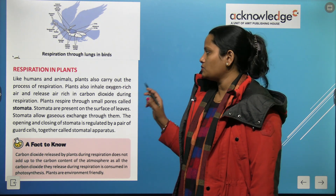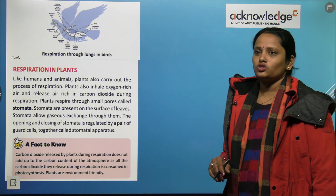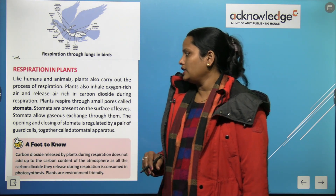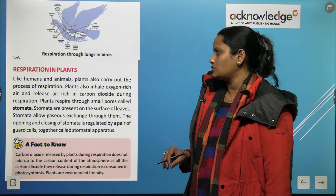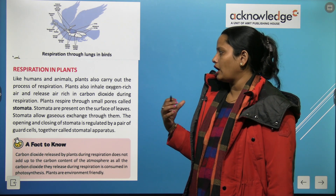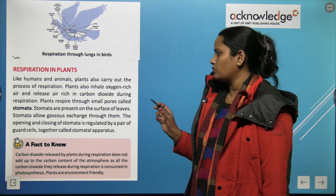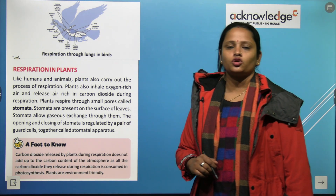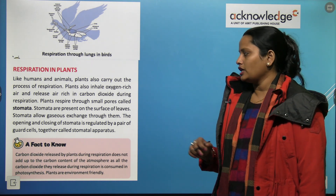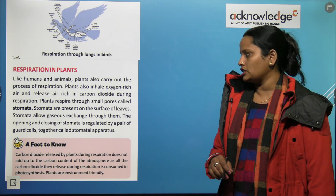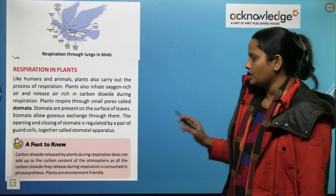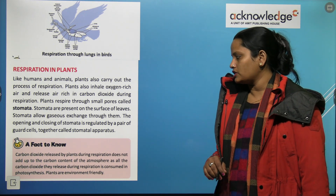Respiration in plants: like humans and animals, plants also carry out the process of respiration. Plants inhale oxygen-rich air and release air rich in carbon dioxide during respiration. Plants respire through small pores called stomata, which are present on the surface of leaves. Stomata allow gaseous exchange through them. The opening and closing of stomata is regulated by a pair of guard cells, together called the stomatal apparatus.